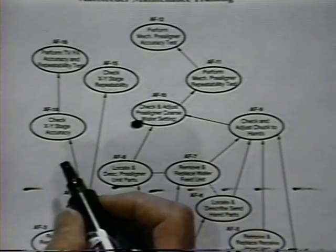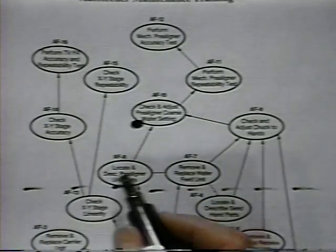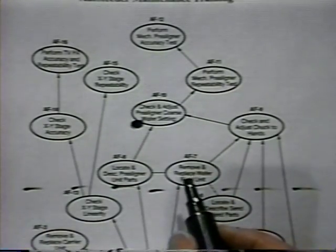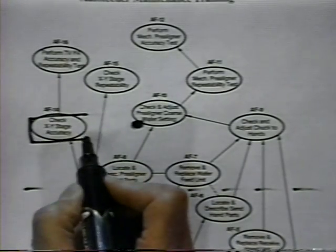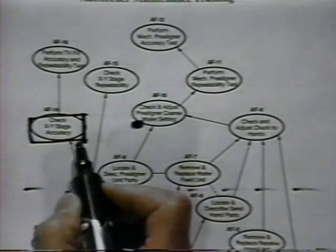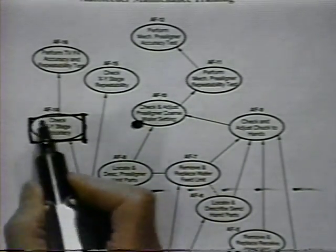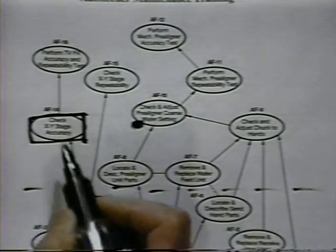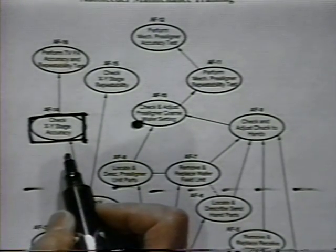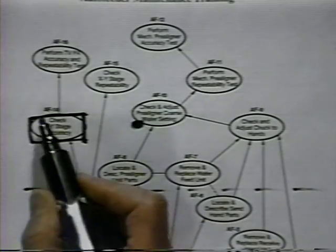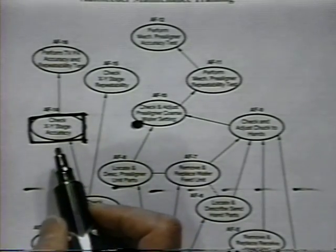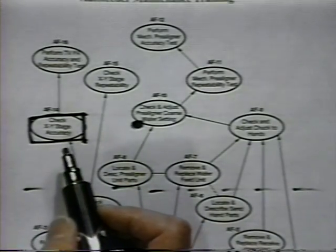Suppose that you wanted to indicate which modules included group sessions. One thing you might do is change the shape of the symbol for a module, so students will know that whenever they run into a rectangle, there will be a group session in that particular module.